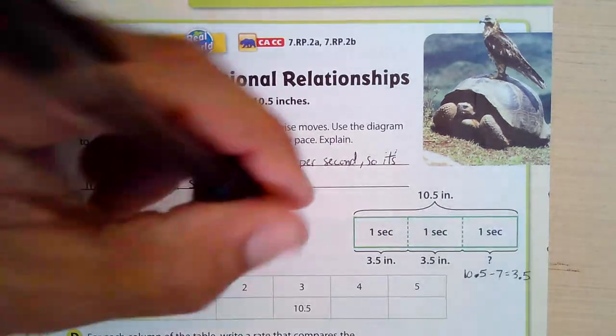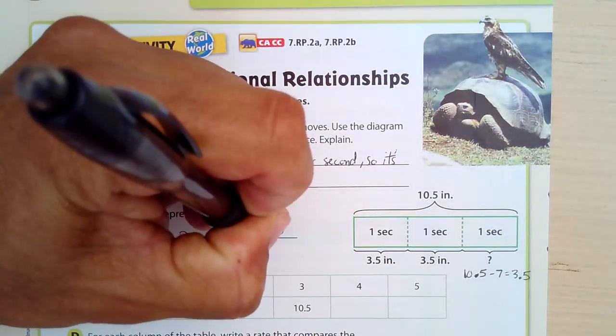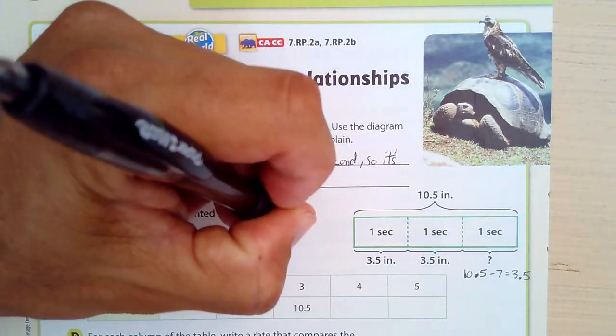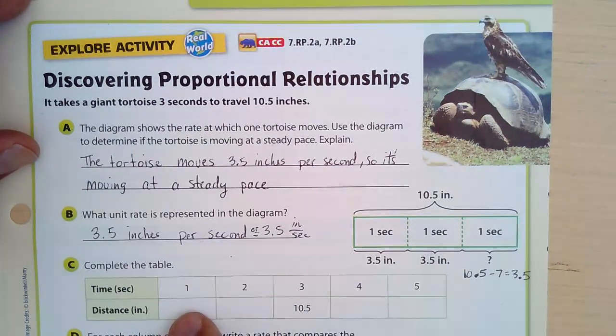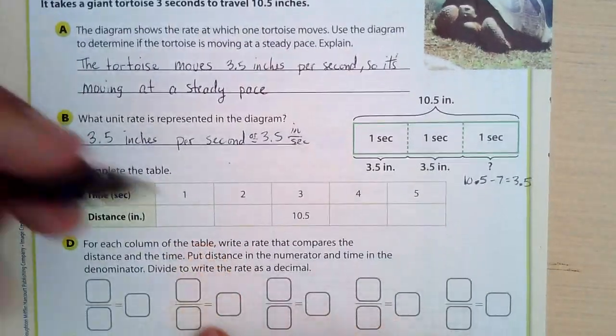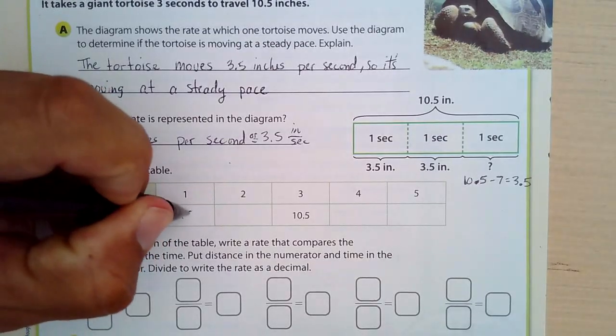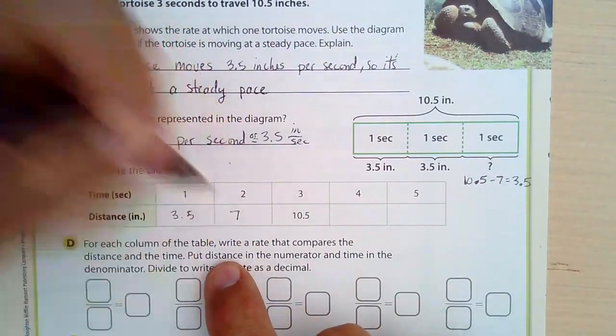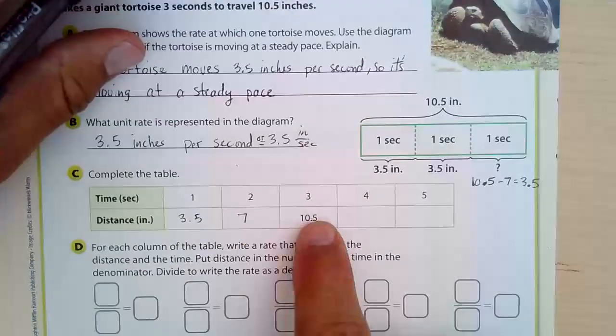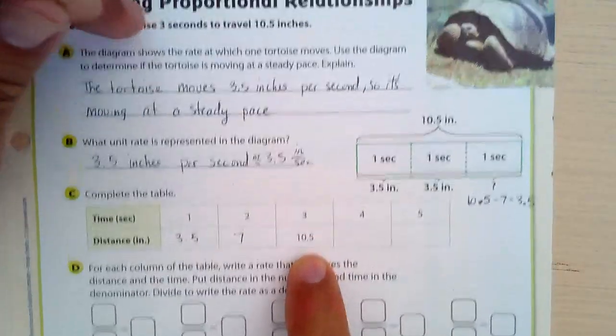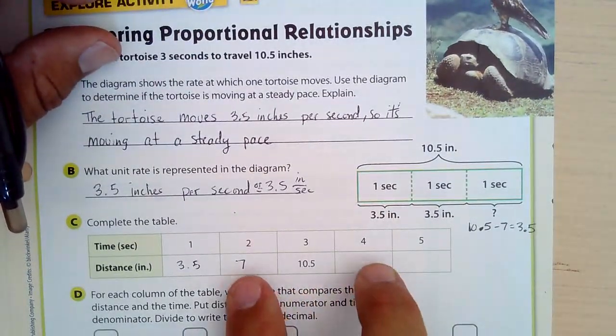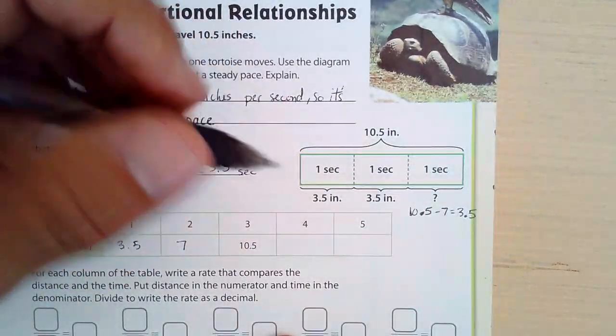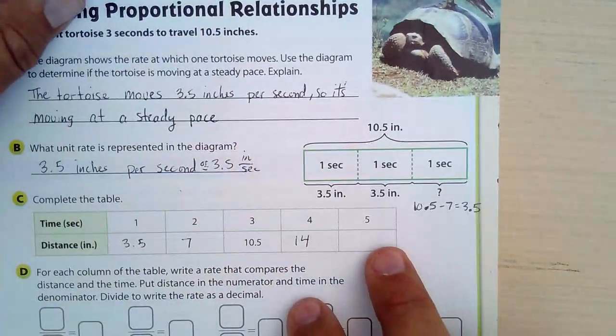Also, I could write this as 3.5 or 3.5 inches per second. Two different ways of writing that. Okay, so I'll complete the table. In one second, it moves 3.5 inches. After 2, that's double that. That's 7 inches. 3, 10.5. We know that from the opening statement right here. 4. Well, 4 is double what 2 is. So that should be 14 inches.